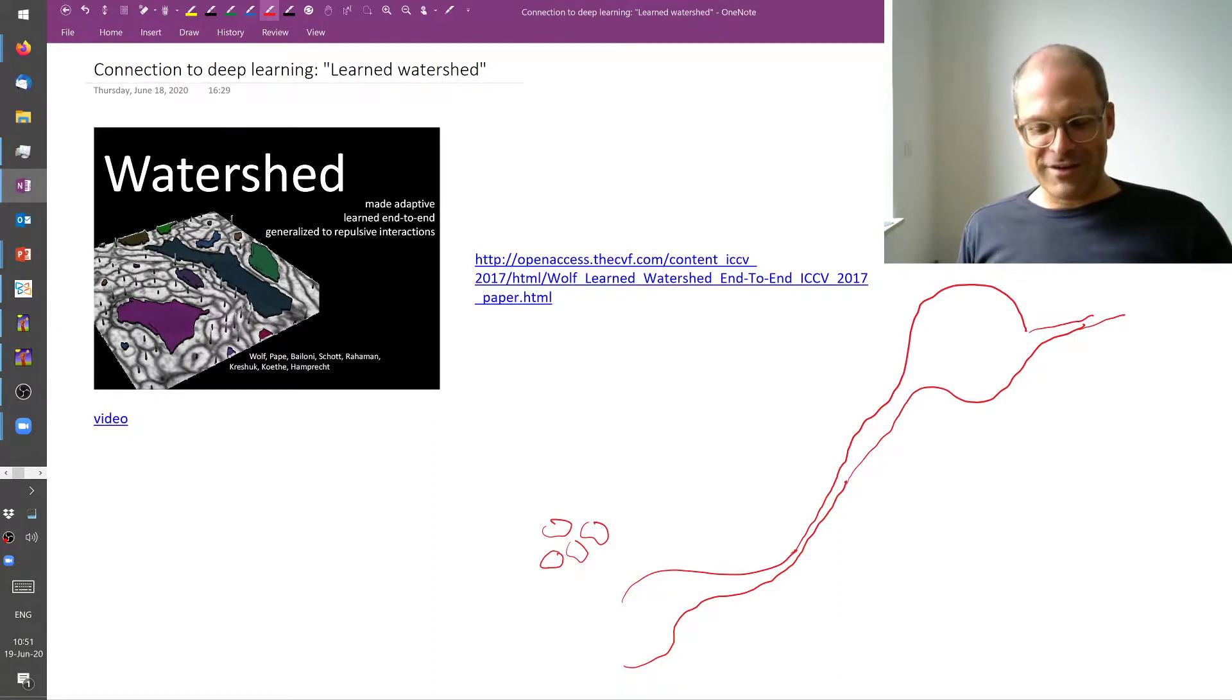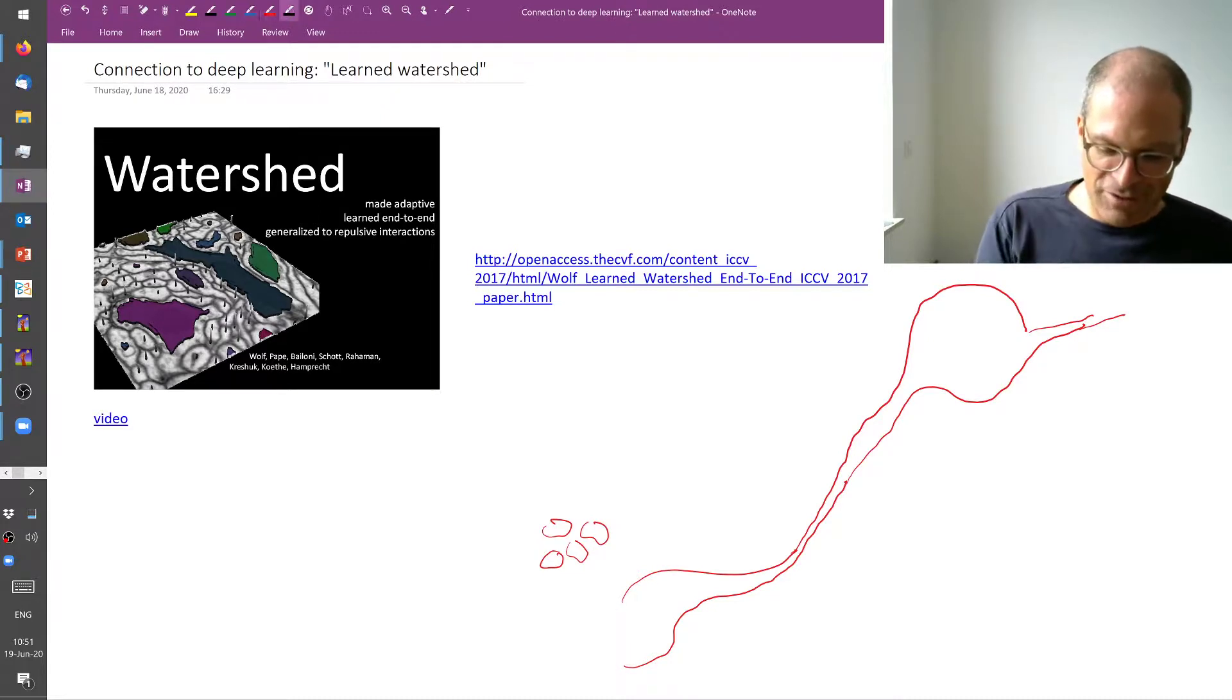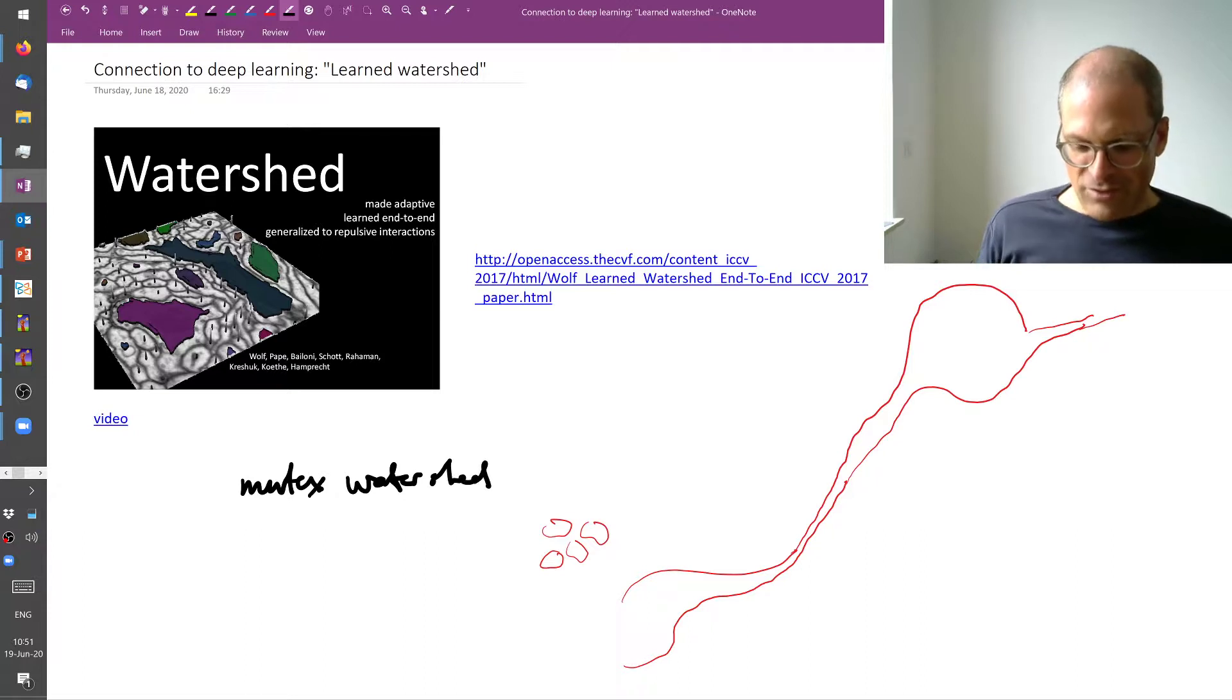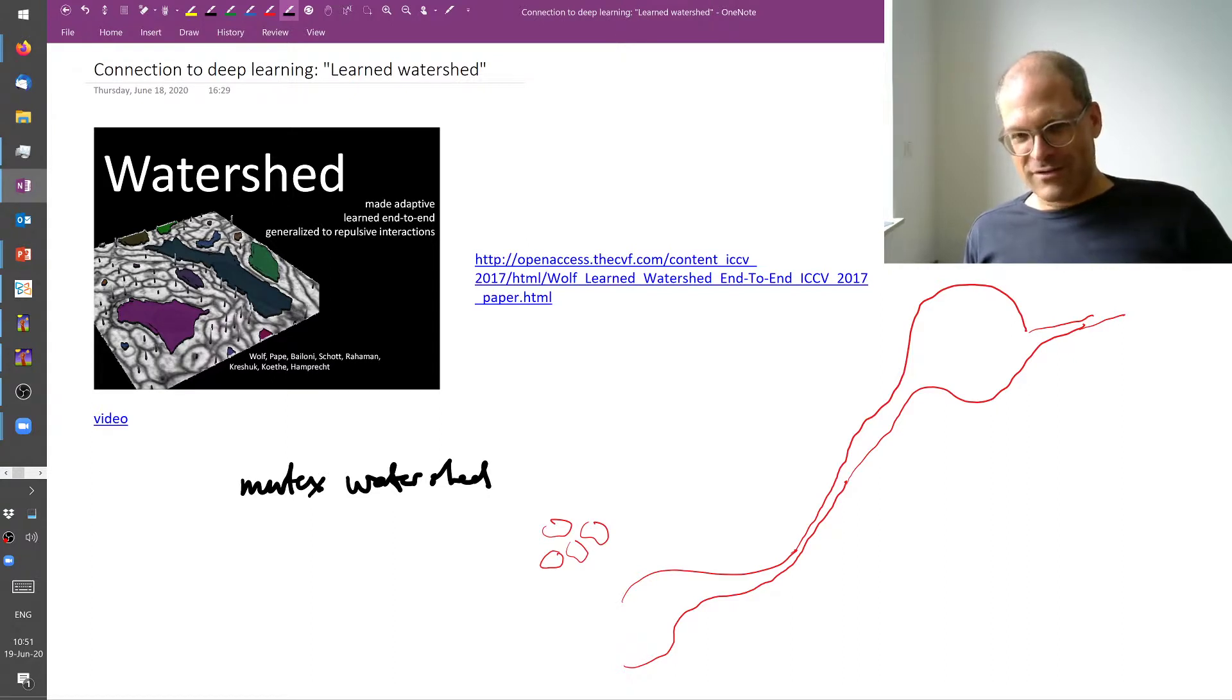So Steffen and Constantin invented it and Alberto led the theoretical analysis. And there is an algorithm called the mutex watershed, which generalizes the watershed to signed graphs. And which actually means that you no longer need seeds in order to obtain an instance segmentation. But that would carry us a little bit far. So I'm not going to talk about the mutex watershed today. But instead I will stop here and ask for more questions.